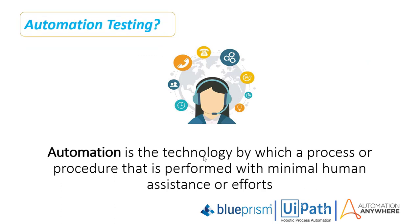First, we'll see what is automation. RPA and test automation look quite similar, but there are multiple overlaps between them. By definition, automation is the technology by which a process or procedure is performed with minimal human assistance or effort. For example, customer support — customers need support around the clock, making it harder to manage for normal human beings. Automation can help very easily and can take the night shift for your employees, ensuring customers get the support they need.